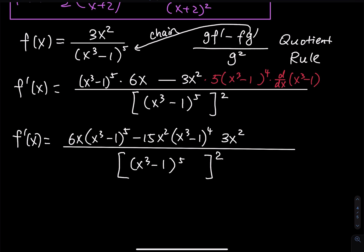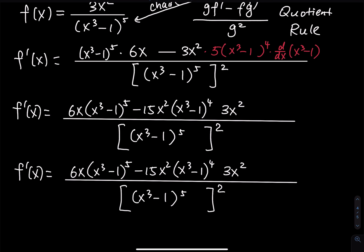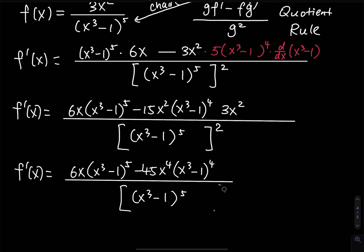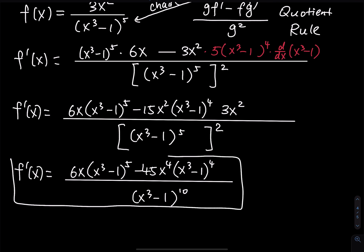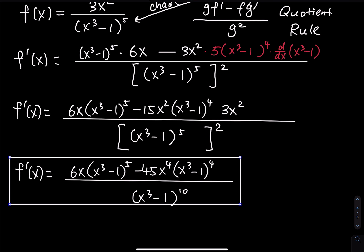Multiply 15 and 3: you have 45. x squared times x squared gives a fourth power. Change the 2 to a 4. And if you want, you can multiply the 5 and the 2 and put a 10 in there. Change the 5 to a 10 — 5 times 2 equals 10. Erase the square bracket. So this is my final answer using the quotient rule and the chain rule.